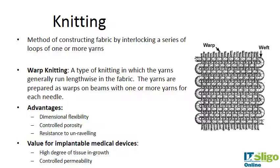Or woven, so we'll just look at that briefly. Knitting is a method of constructing fabric by interlocking a series of loops of one or more yarns — that's the official definition. Warp knitting is a type of knit in which the yarns generally run lengthwise in the fabric, and the yarns are prepared as warps on beams with one or more yarns for each needle, and then they are threaded through.